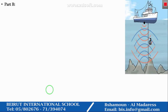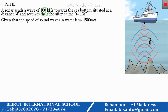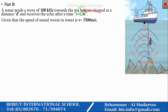Part B: A sonar sends a wave of 100 kilohertz. To convert kilohertz into hertz, we must multiply by 1,000, so it becomes 100,000 hertz. The wave travels toward the sea bottom situated at a distance d, and the echo returns after a time t equal to 1.3 seconds. Given that the speed of sound in water is v equal to 1,500 meters per second. Note that t = 1.3 seconds is the time needed by the wave to travel down to the sea bottom and return back to the sonar — this is the time of the echo.